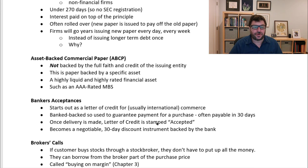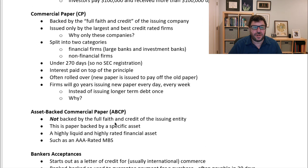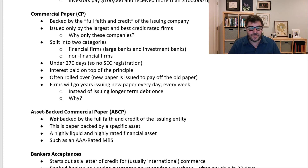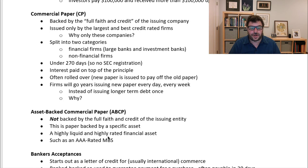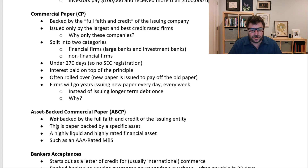The next topic is asset-backed commercial paper. The difference between commercial paper and asset-backed commercial paper is that asset-backed commercial paper is not backed by the full faith and credit of the issuing entity. Instead, this paper is backed by a specific asset, like a highly liquid or highly rated financial asset, such as a AAA-rated mortgage-backed security. We discussed how asset-backed commercial paper was used in financing housing during the financial crisis of 2008, which we covered at the beginning of the semester.